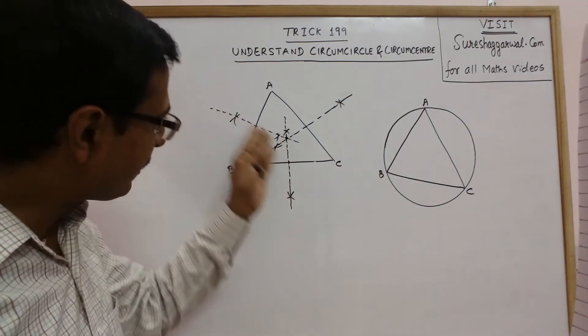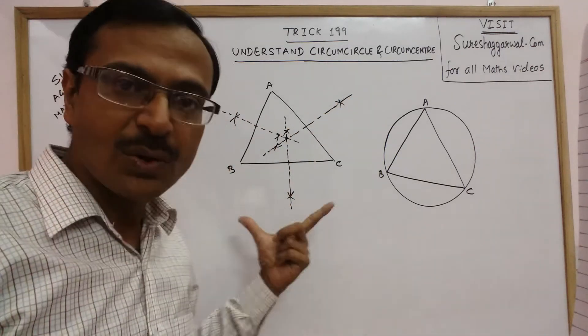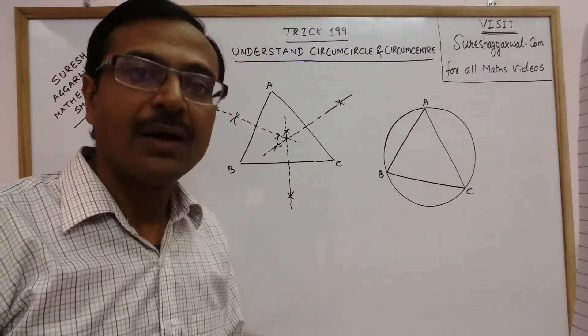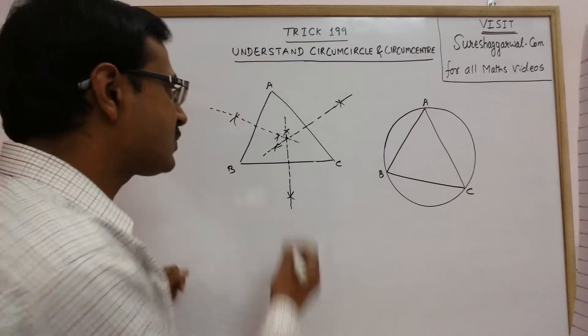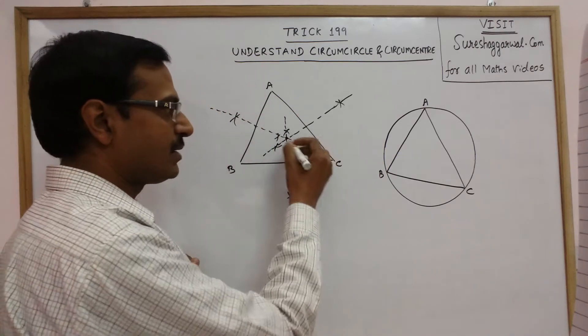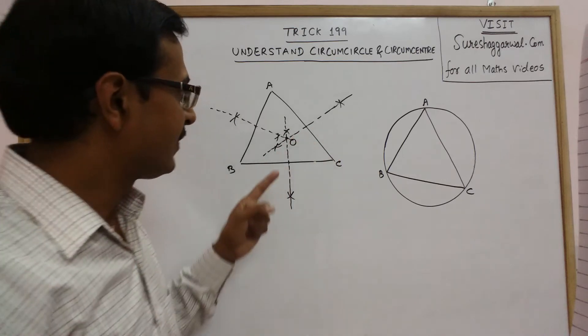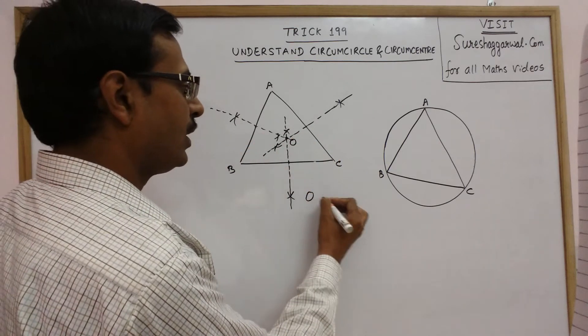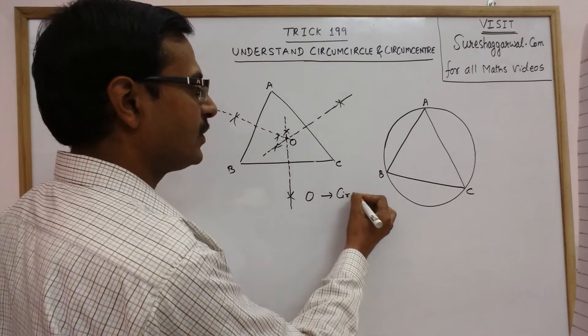All the three perpendicular bisectors of the sides of this triangle are concurrent. This point of intersection of the three perpendicular bisectors of the sides, this point O is called circumcenter.